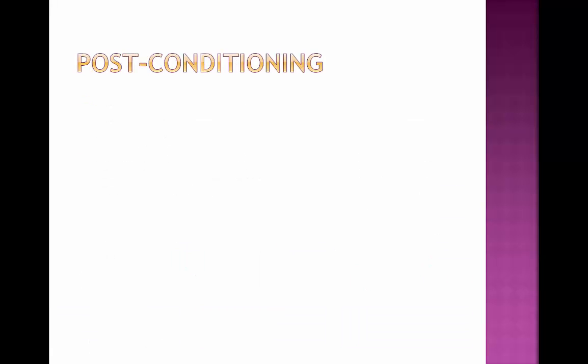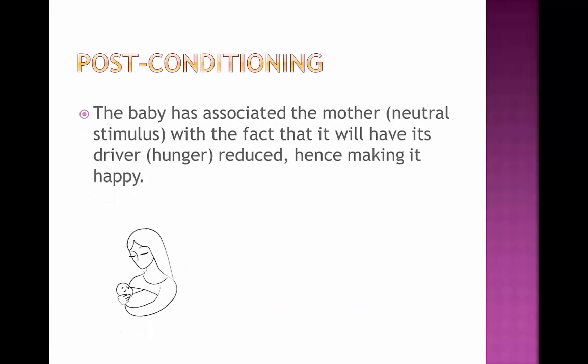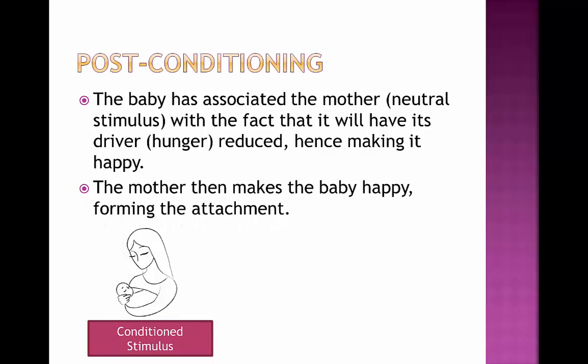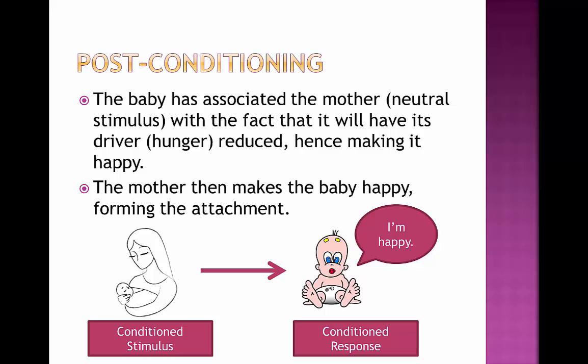This then leads us to the final step: post-conditioning. Here the mother is going to make the baby happy. The mother is now no longer a neutral stimulus, but is in fact a conditioned stimulus. What this means is that if the mother comes towards the baby, the baby is going to associate the mother with the fact that it is going to become happy again. Just having the mother around is going to give the baby a conditioned response of having its driver suppressed, in theory — hence making it happy and forming an attachment between the two of them.